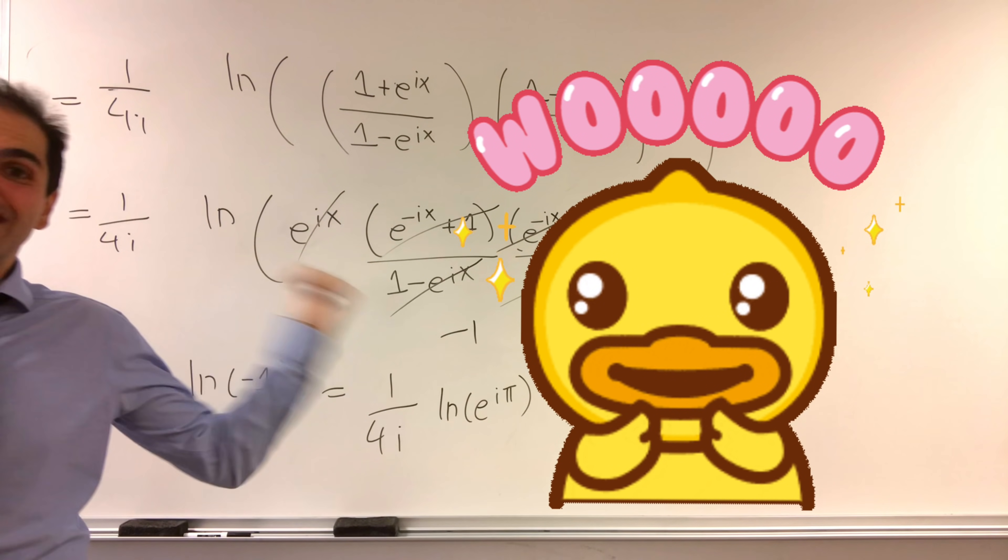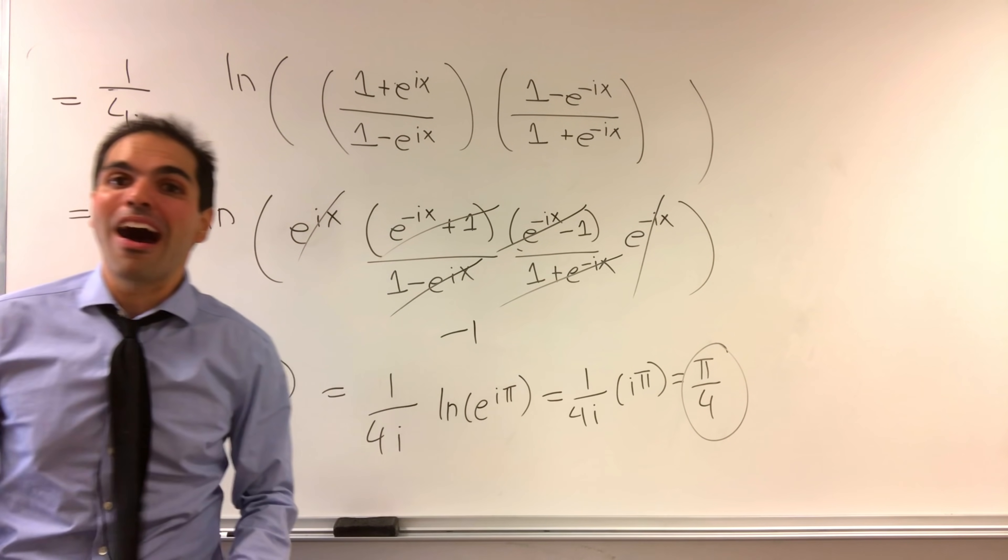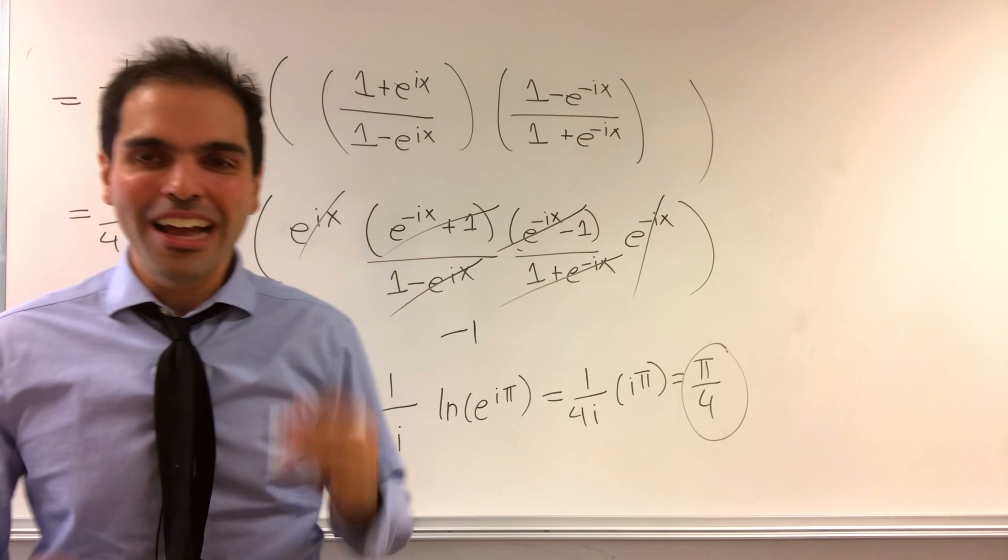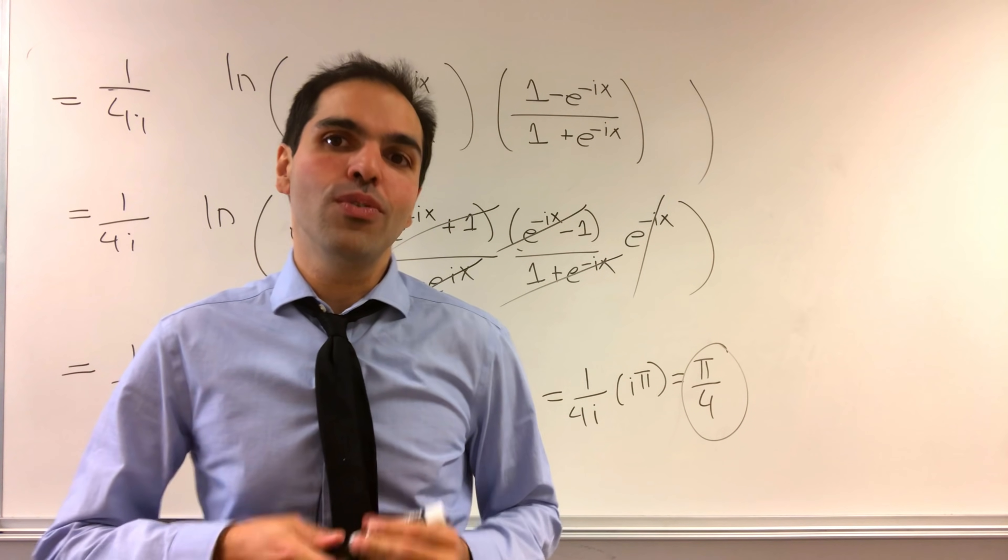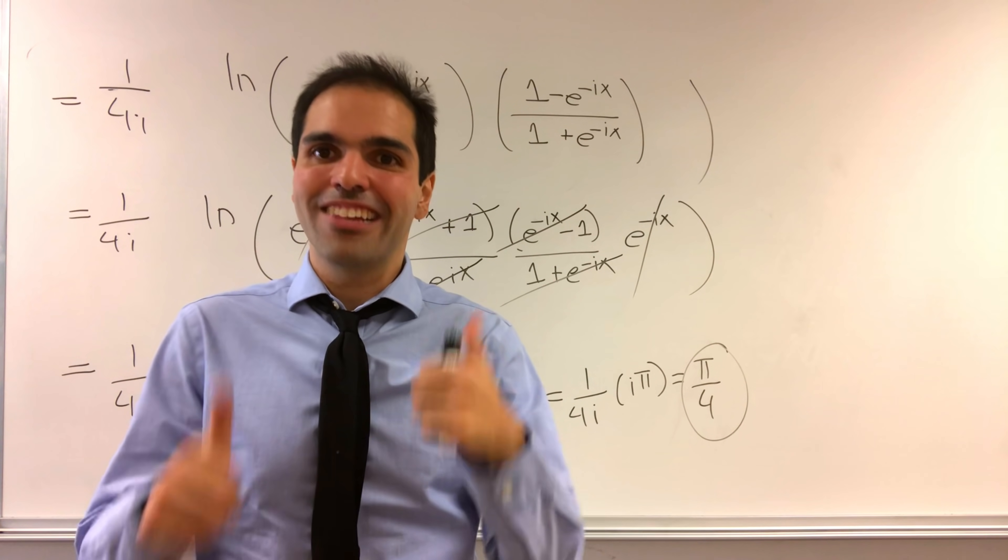So in other words, the sum of those odd sines is just pi over 4. How cool is that? All right. I hope you like this. If you want to see more math, please make sure to subscribe to my channel. Thank you very much.